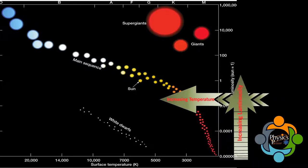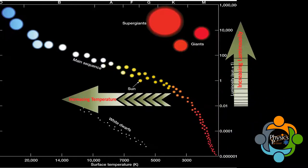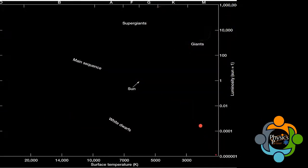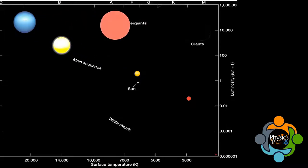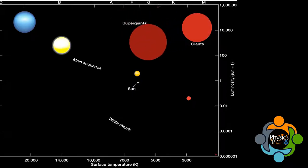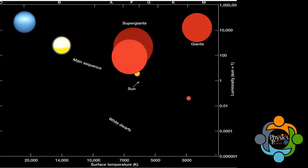In the theoretical HR diagram, depending on its initial mass, every star goes through specific evolutionary stages dictated by its internal structure and how it produces energy. Each stage corresponds to a change in temperature and luminosity, seen as movement across different regions of the HR diagram as it evolves. This reveals the true power of the HR diagram: astronomers can know a star's internal structure and evolutionary stage simply by determining its position in the diagram.